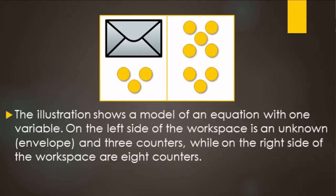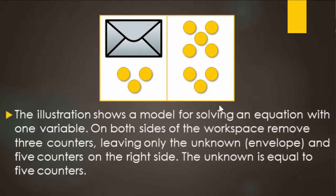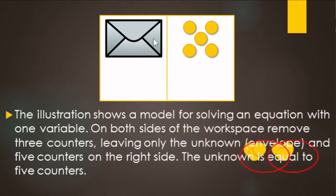We're trying to figure out how many yellow dots are in the envelope. The number of dots on this side and on this side are equal. We can see that these three here match up, so what's left over is going to match what's in the envelope — in this case, 5.